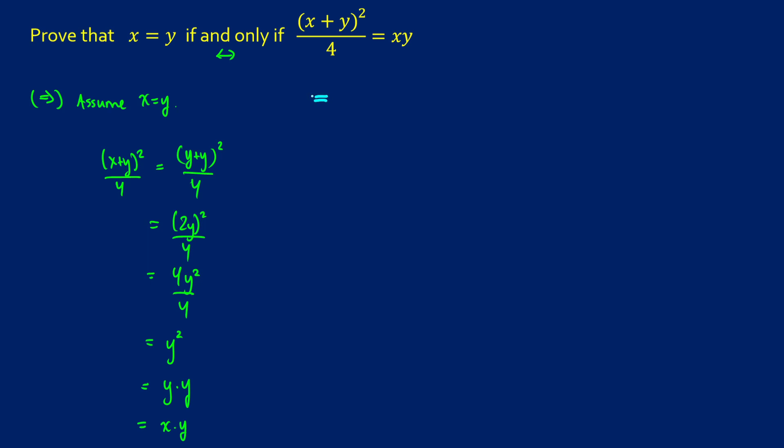Now, the other direction is a little bit more challenging at first to figure out how to approach it, but it's really just some basic algebra. So we're going to assume now that xy is equal to (x + y)² / 4. Now, we want to show that x is going to be equal to y.